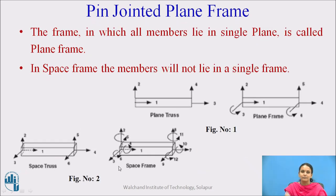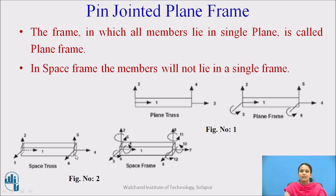Pin-jointed plane frames are those where all members lie in a single plane. Members which do not lie in a single plane — lying in x, y, and z directions — are called space frames. A normal building frame, which exists only in x and y directions, is a perfect example of a plane frame.